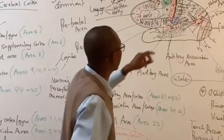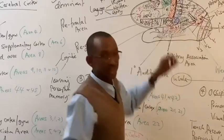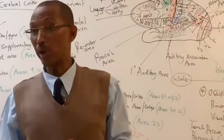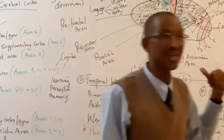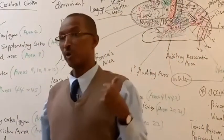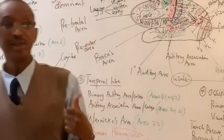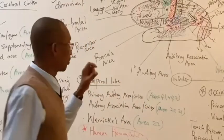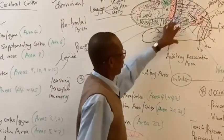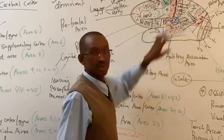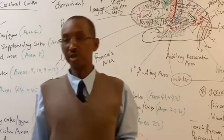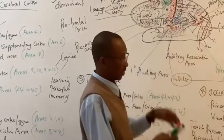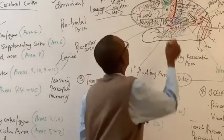So obviously there must also be an auditory association area. The primary auditory area is mainly located in the middle part of the superior temporal gyrus. The posterior one-third of the superior temporal gyrus is occupied by the Wernicke's area. So the middle part of the superior temporal gyrus plus some aspect of the middle temporal gyrus is where the primary auditory cortex — area 41 and 42 — is located.